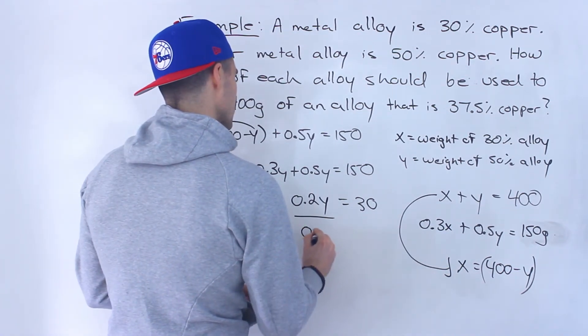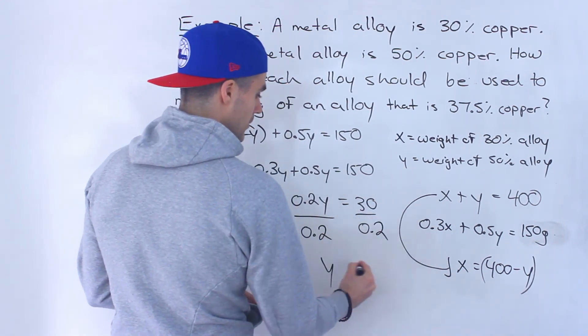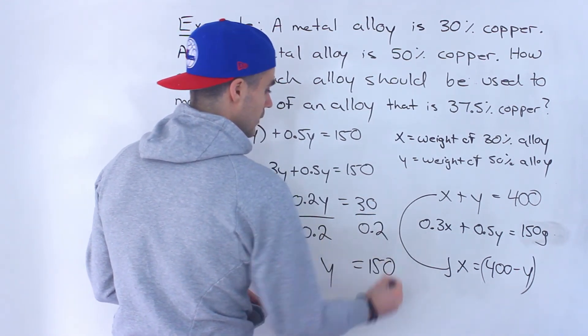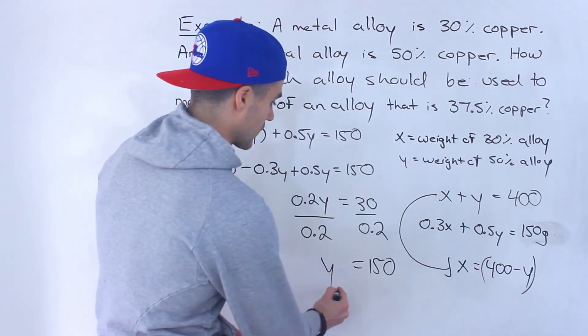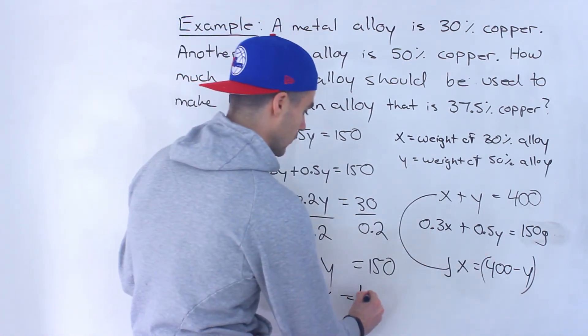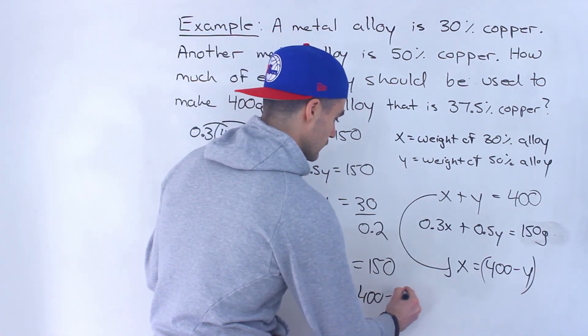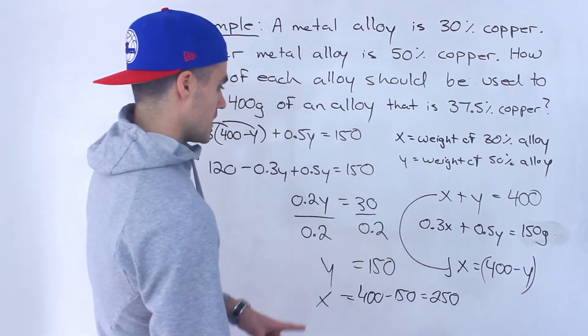So we can divide both sides by 0.2. 30 divided by 0.2 would give us 150. And then we could solve for x because x is 400 minus y. So 400 minus 150 gives us 250.